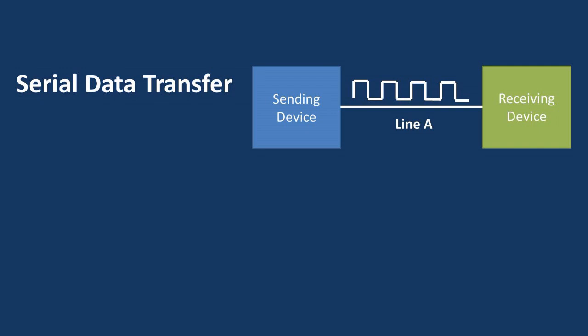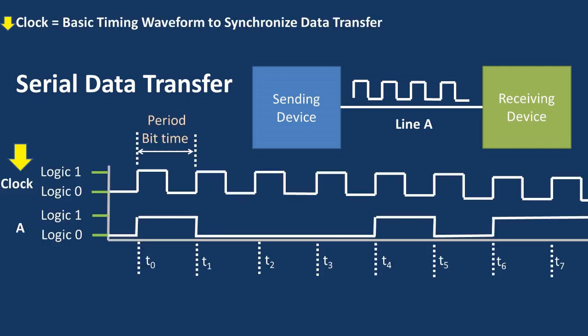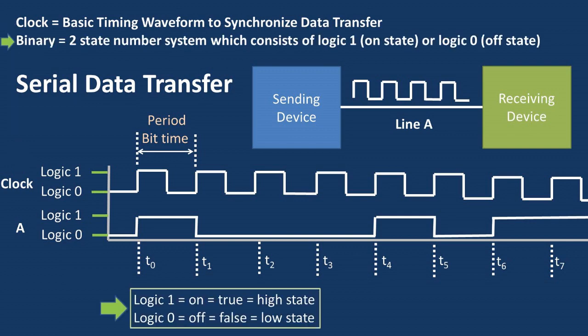We will need to know some terminology to determine how the data will be transferred. We have the clock, which is a periodic square waveform used for timing and synchronizing of data transfer between the two devices. We have a binary number system, which is a two-state number system consisting of a logic one or on state, or a logic zero or off state.